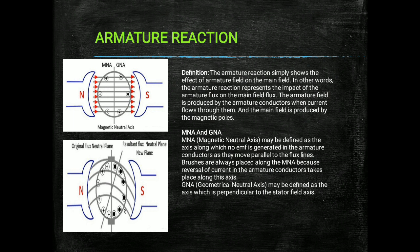The brushes are always placed along the MNA because reversal of current in the armature conductor takes place along the MNA axis. The brush collects the current from the commutator and supplies it to the external load resistance. The commutator converts the alternating current into direct current. Therefore, the MNA must be at the brush axis — that means brushes are always placed along the MNA.